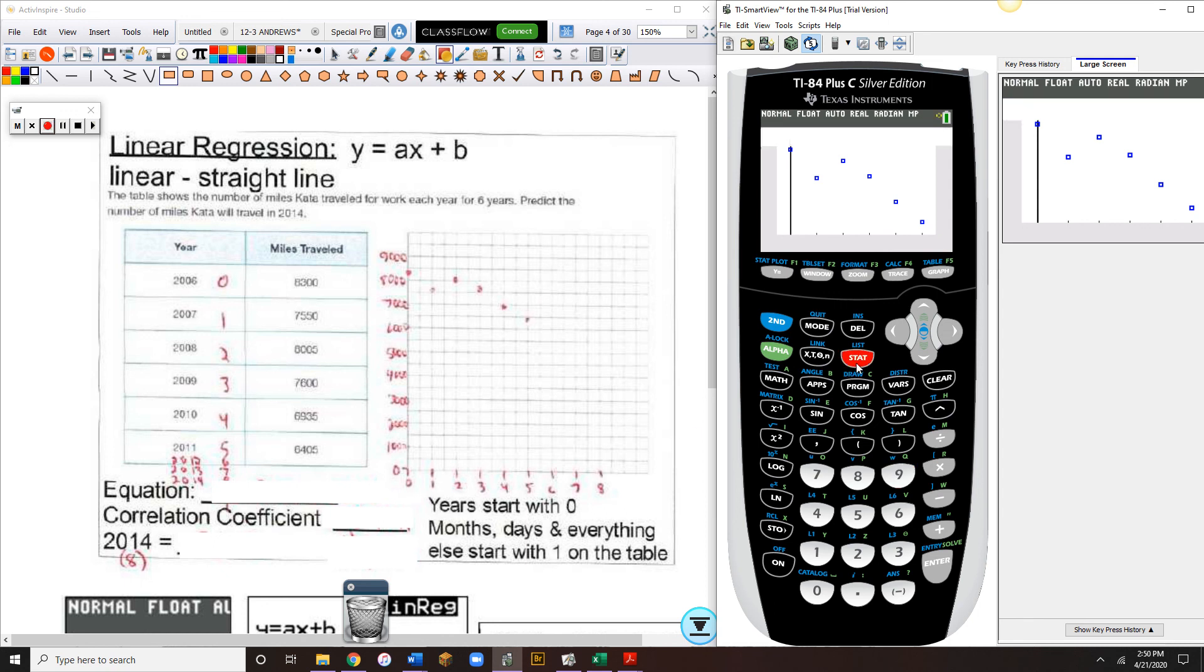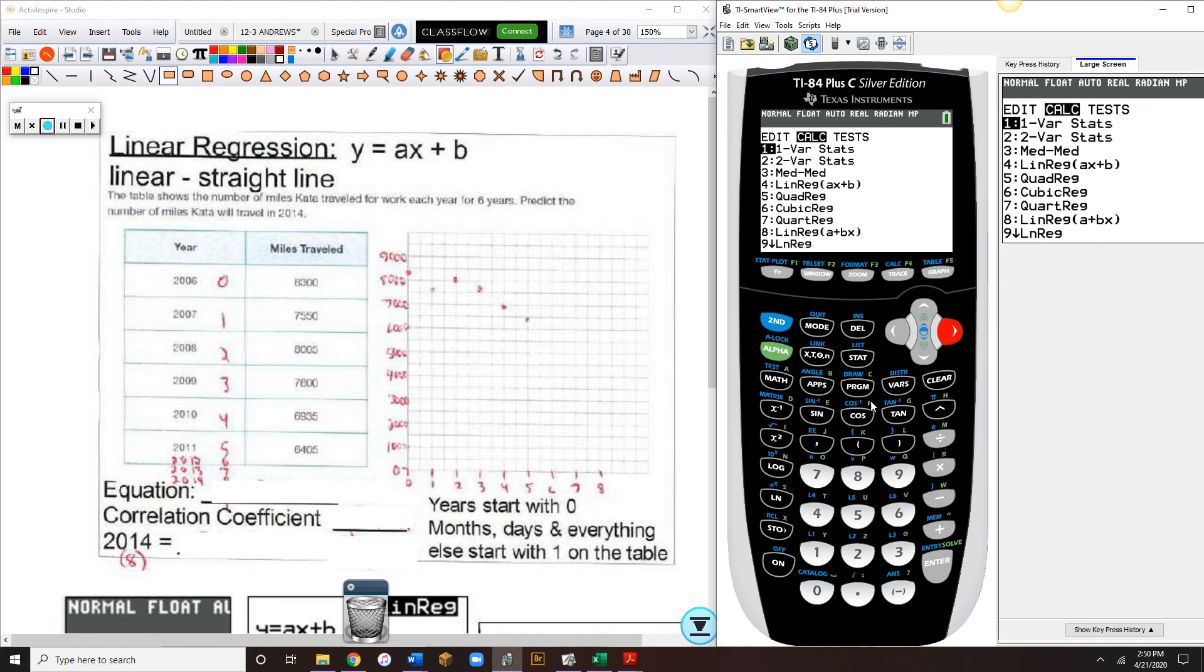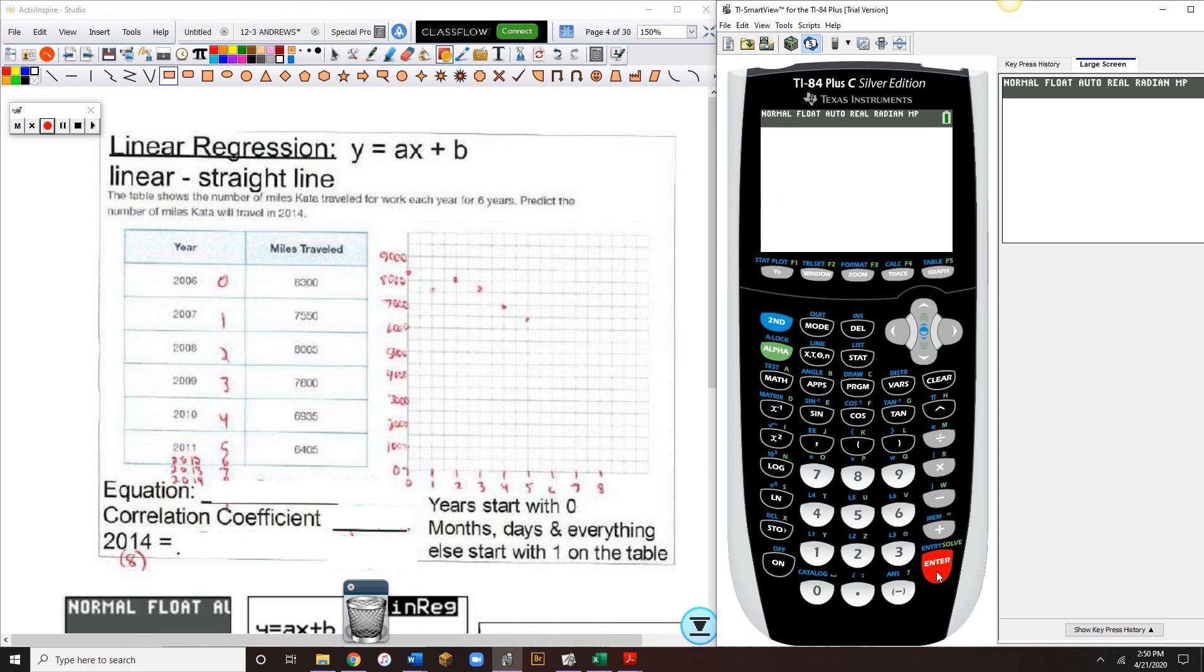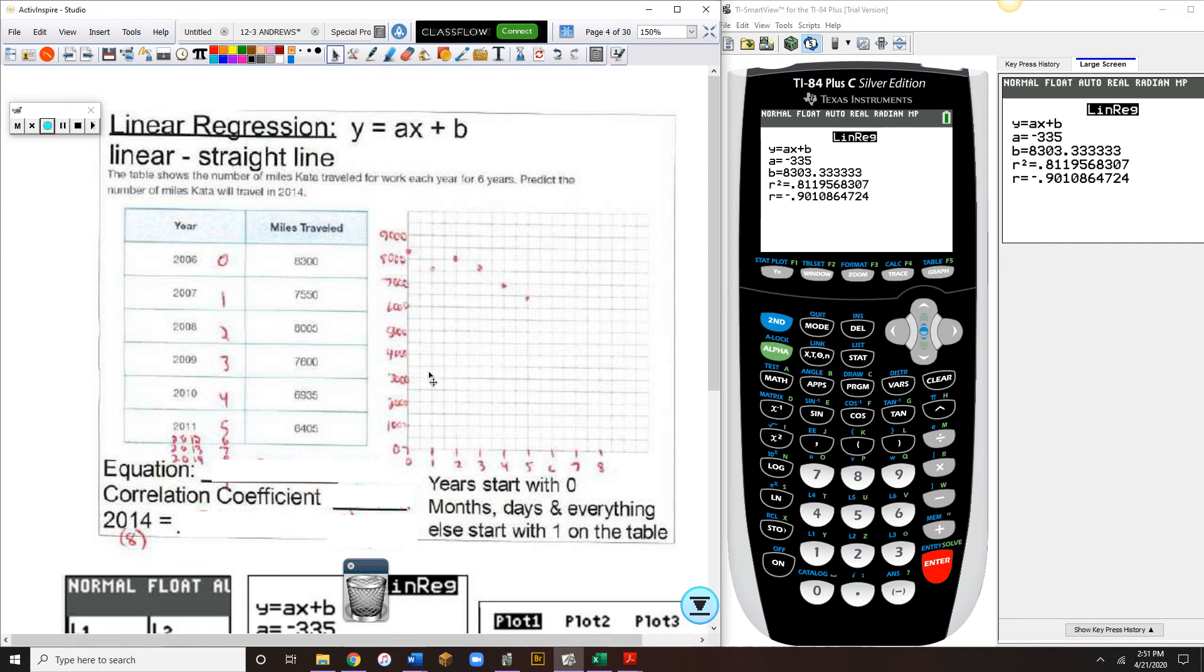To do the regression, we're going to press stat, calc, 4. We hit enter until we get to this screen. So our A, remember that's your rate of change, that's the slope, which is usually M in most linear equations. But the calculator uses the letter A, is negative 335X. And then the B value doesn't come out nice and pretty, but we're going to just round it, 8,303.